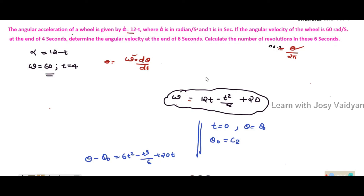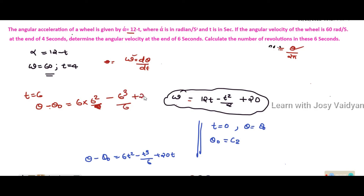The question asks for the number of revolutions in 6 seconds. We substitute t equals 6 into the theta equation. Then the number of revolutions equals theta divided by 2 pi, giving us the total revolutions.